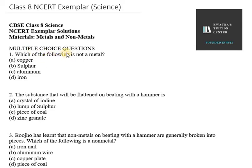The question asks for something that is not a metal. Copper is a metal, but sulfur is not a metal — it is considered a non-metal. So option B, sulfur, is the non-metal.